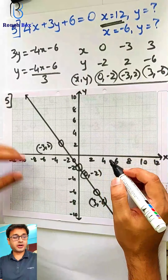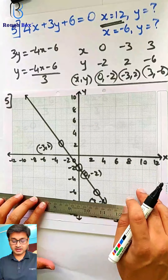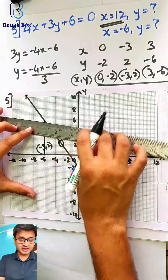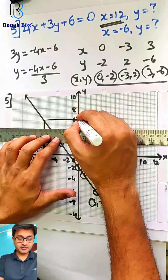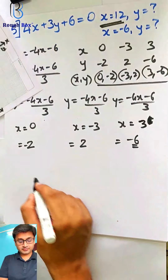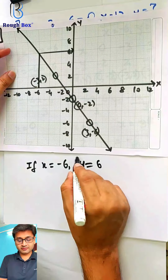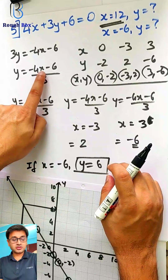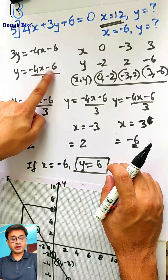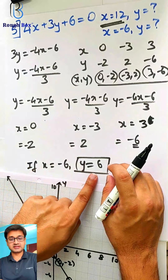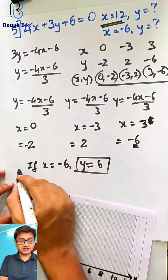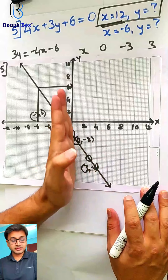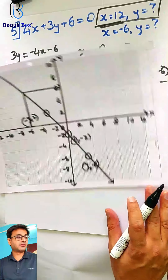In the exam I am 100% sure they will not give you a question which does not fit. Let's do the second part: x is equal to minus 6. Taking x as minus 6, what is y? Y becomes 6 — right over there. If x is minus 6, then y is 6. To verify: put x as minus 6; minus 6 times minus 4 is 24; 24 minus 6 is 18; 18 divided by 3 gives 6. Correct! So you can always verify your answers. Such sums will never come in the exam.